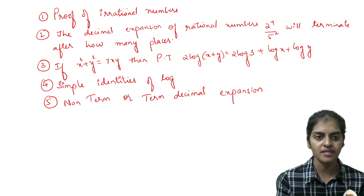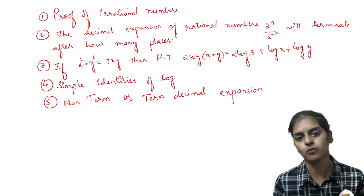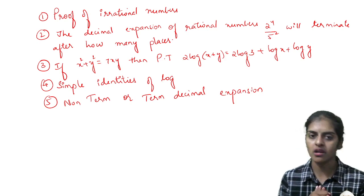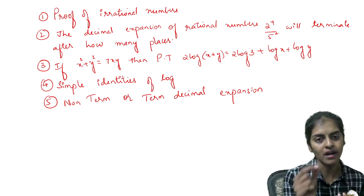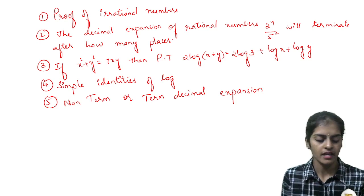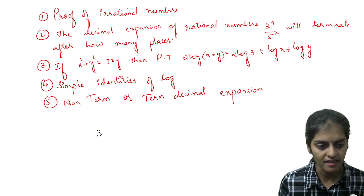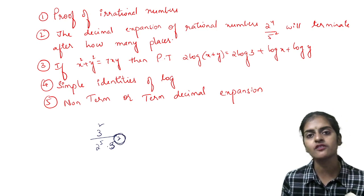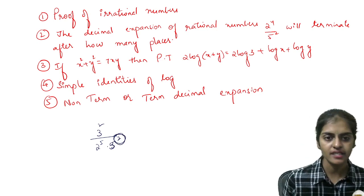Second model: the decimal expansion of rational number 2^4 / 5^2 will terminate after how many places. Remember, whatever is the power of the denominator - for example, 3^2 / (2^5 × 5^2) - the lowest power between 2 and 5 determines how many decimal places you'll have.